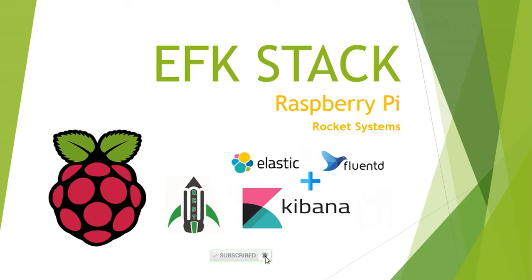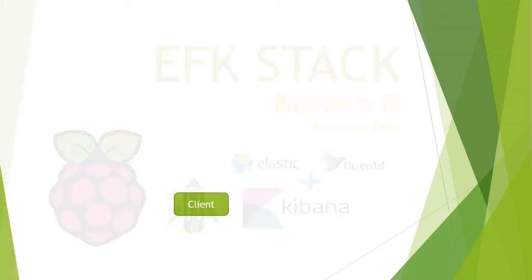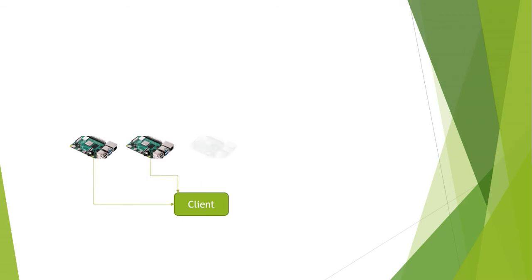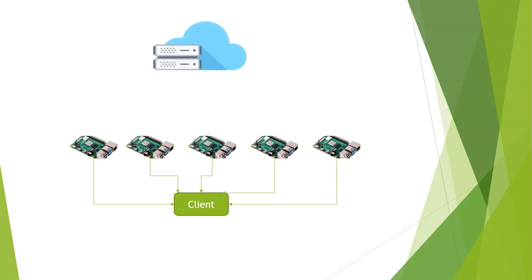Now let's talk about a scenario where we are using Raspberry Pi for some weather monitoring or maybe some web server project. Let's say you have installed Raspberry Pi at a client site and you have installed 5 devices there. Now they all are connecting and doing their job and let's say they are uploading data to a server or a cloud. Now after some time any one of the devices has gone down for some reason and is not uploading the data.